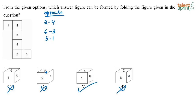So whenever you have such questions, just write down which are the opposite faces. You will have 3 sets of opposite faces. Once you write that down, just check with the options and you can eliminate the wrong answers.